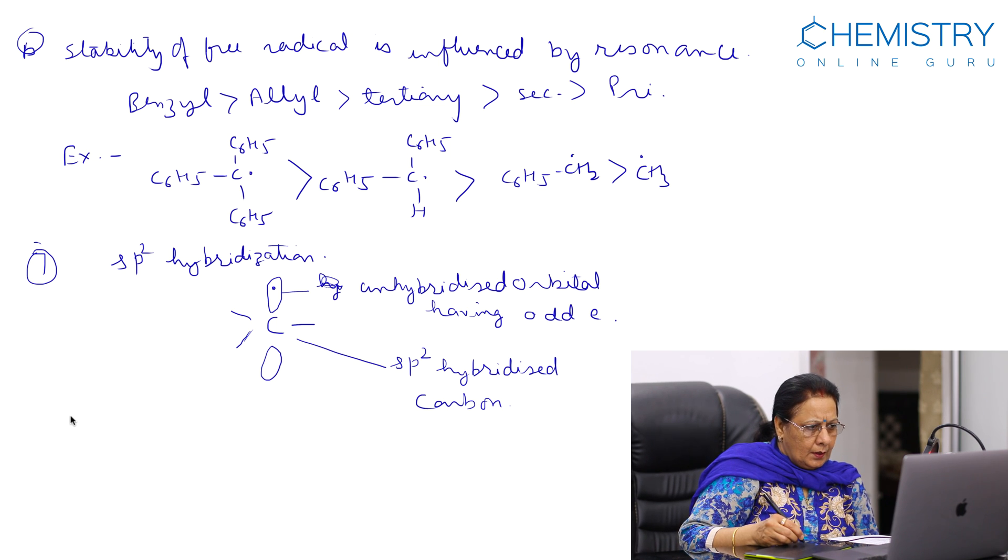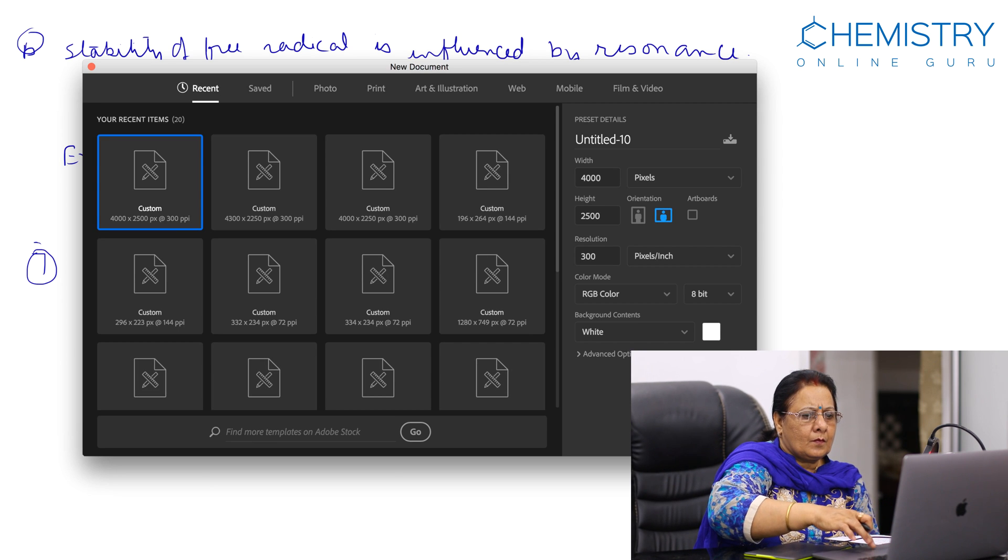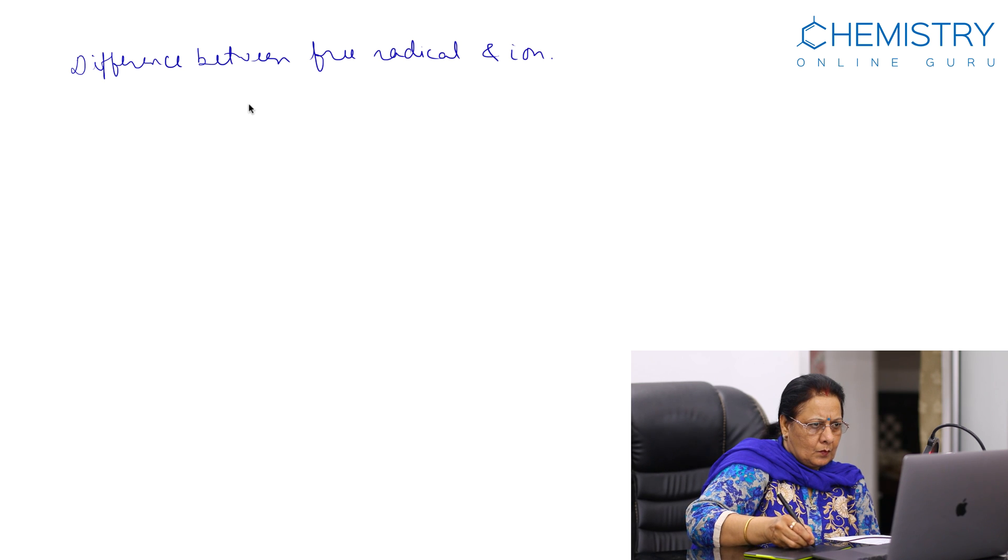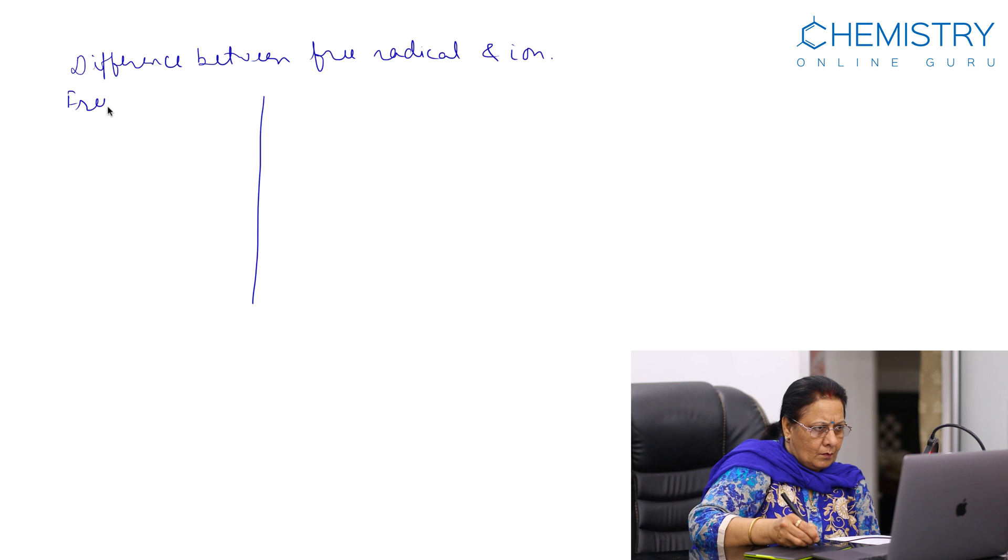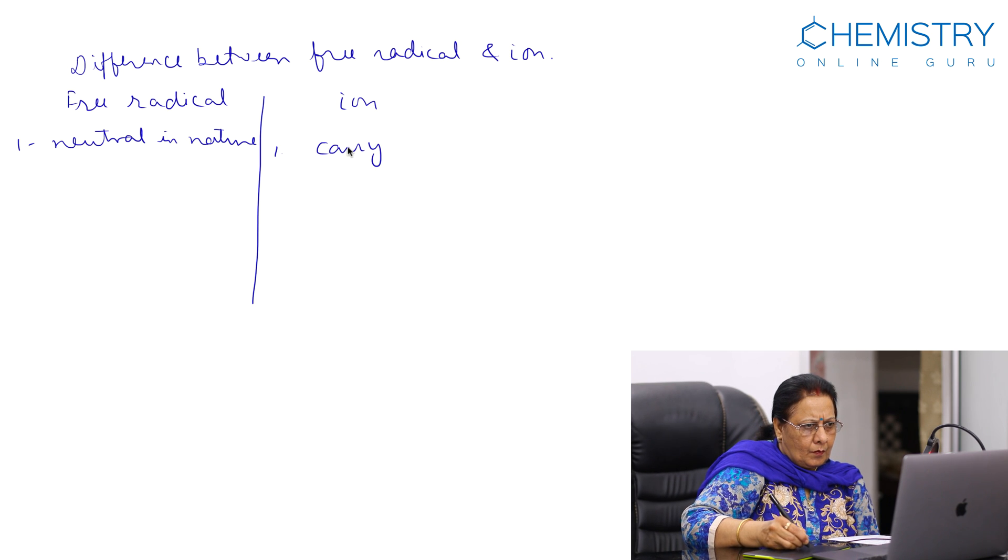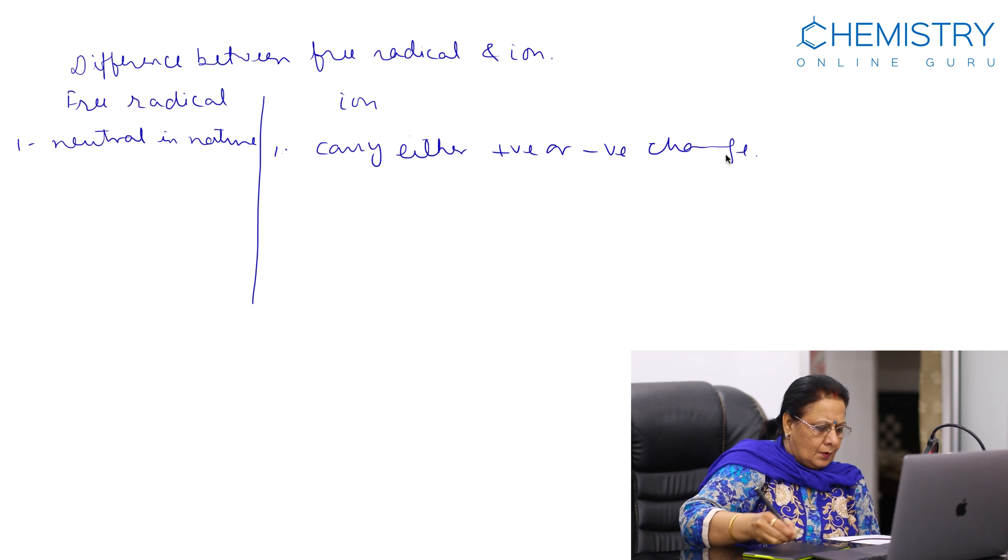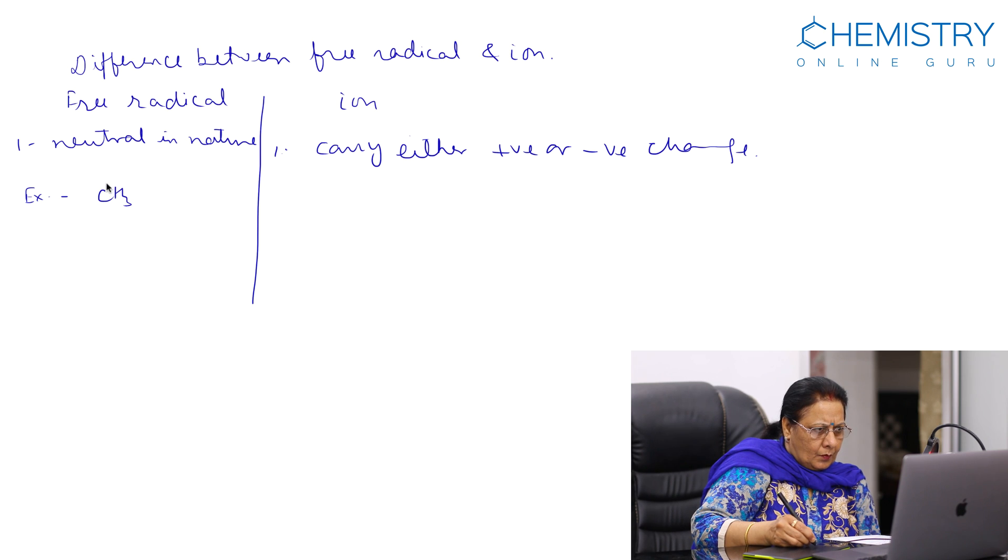Now, difference between free radical and ion. Free radicals are neutral in nature. Ions carry either positive or negative charge. Examples: methyl free radical, chlorine free radical, hydrogen free radical.